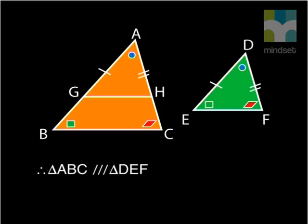This takes us back to the original two triangles, ABC and DEF. We have shown that their corresponding sides are in proportion. We started with their corresponding angles equal and so have proved that they are similar triangles.